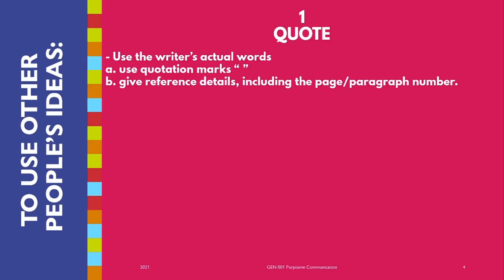When you try to paraphrase, it doesn't seem to convey the same meaning as what the author has said. So when you quote, you quote word for word what the author has said — perhaps because the author has used very good words and the explanation was so vivid and expressive.